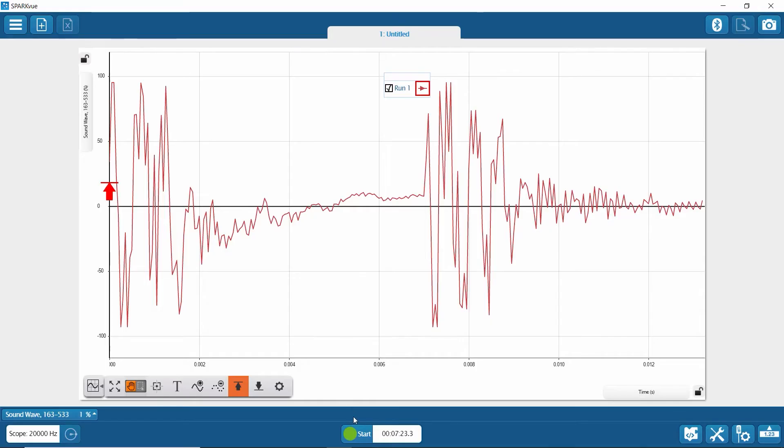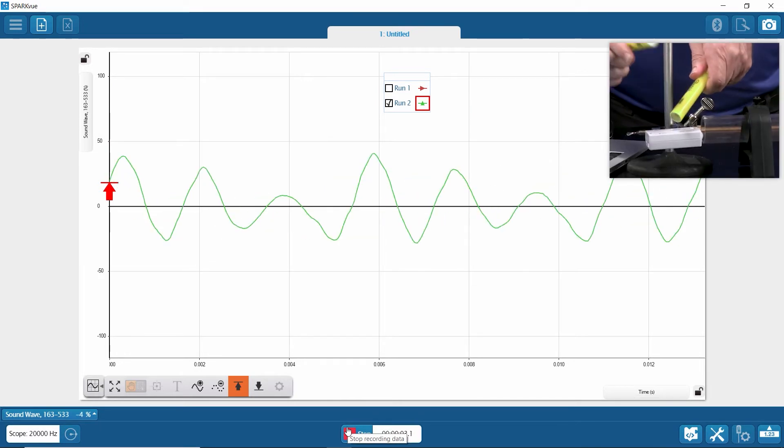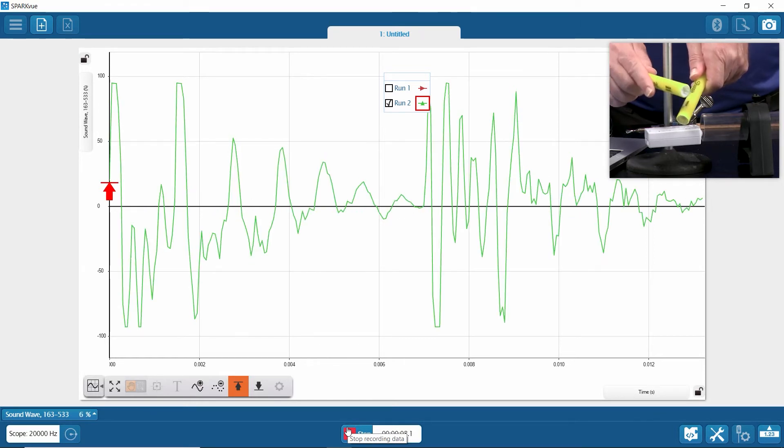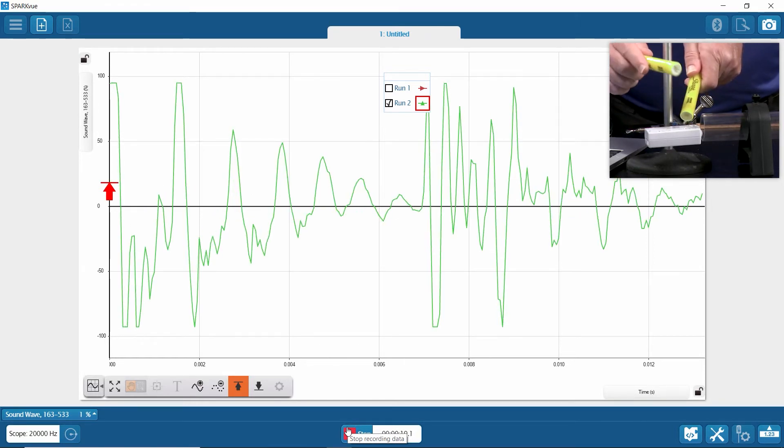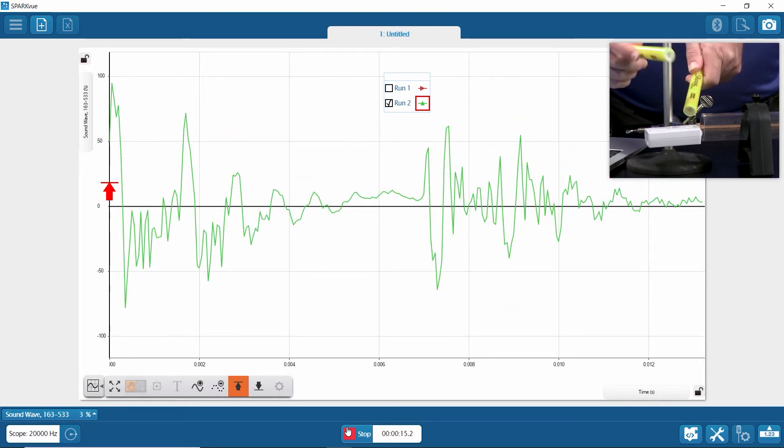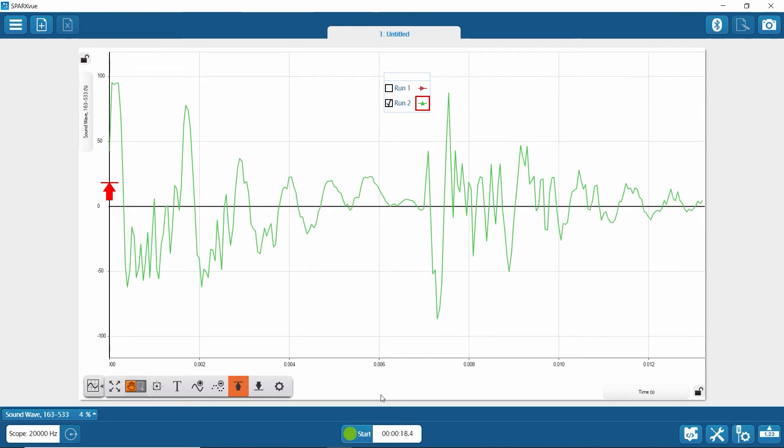So I can hit start and I'll look for a similar pattern. That one's a little noisy. So it's not dying down as much here. And so this one, that's where the echo is returning there for run two. A little harder to see.